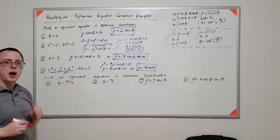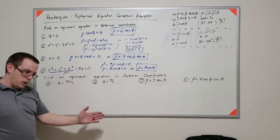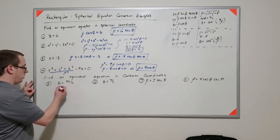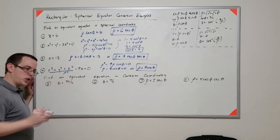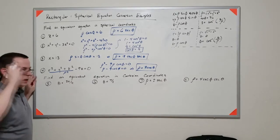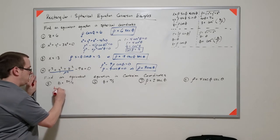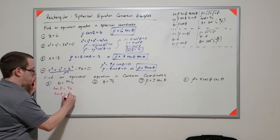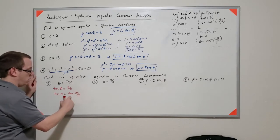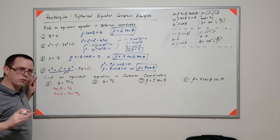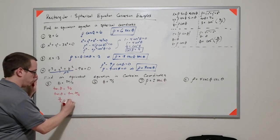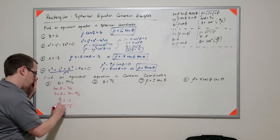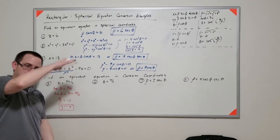I have θ equals 3π/4. That's a rotation of 3π/4, which describes a plane — like a line in the xy-plane that extends out into a full plane. Since it's a function of x and y, I use the fact that tangent of θ equals y over x. Tangent of 3π/4 is −1, so y over x equals −1, meaning y equals −x. That's a line in the xy-plane, but represents a full plane overall.